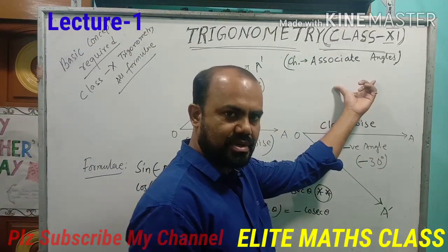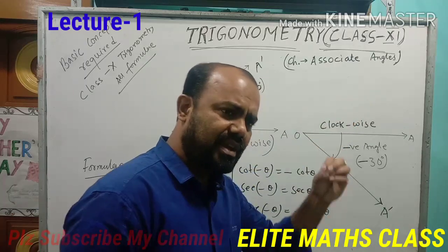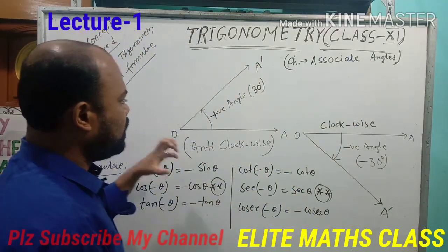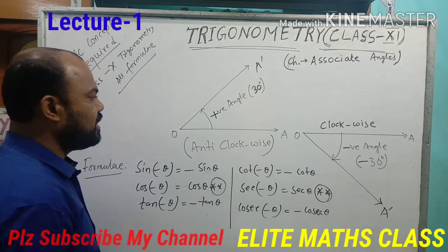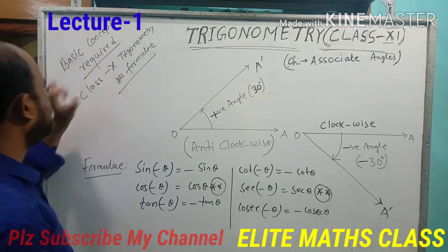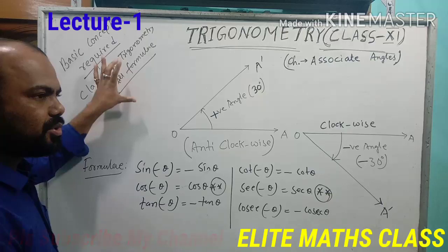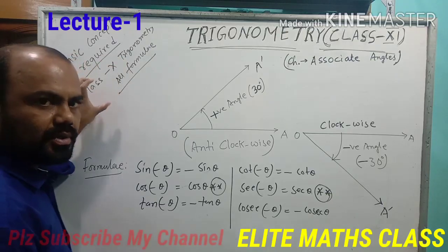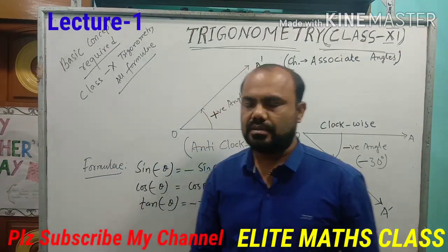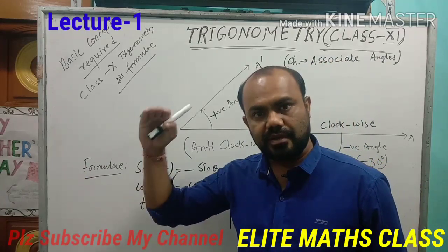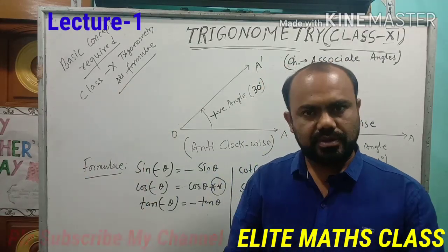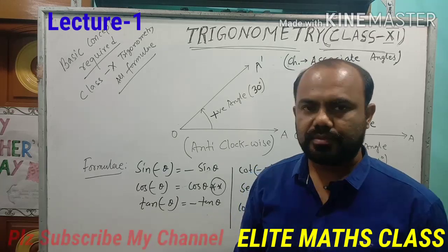The chapter name is 'Associate Angles', which is the very first chapter of class 11 trigonometry. Before that, the concept you need is the basic concept — the whole trigonometry of class 10, all the formulas and all the techniques also, the three identities and the value table of class 10. I assume that you know all the formulas of class 10.